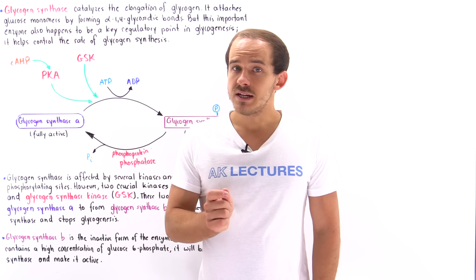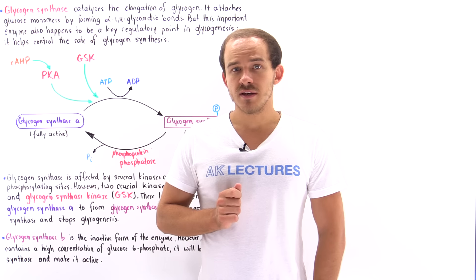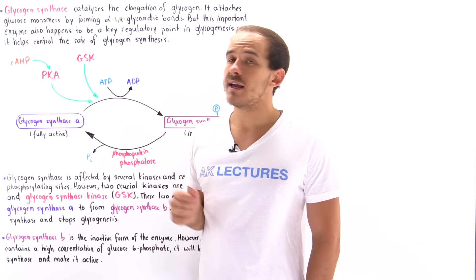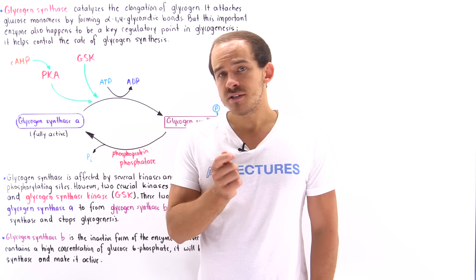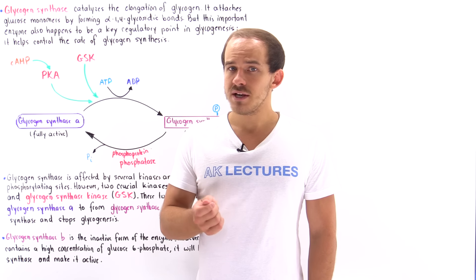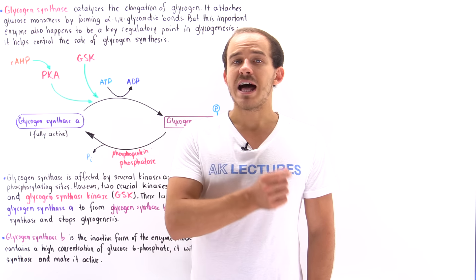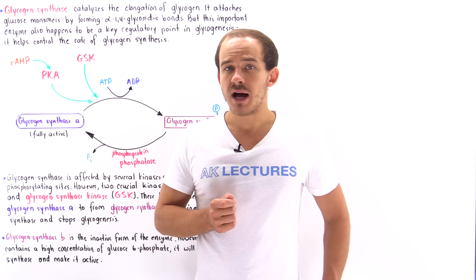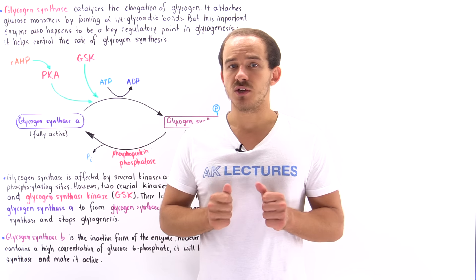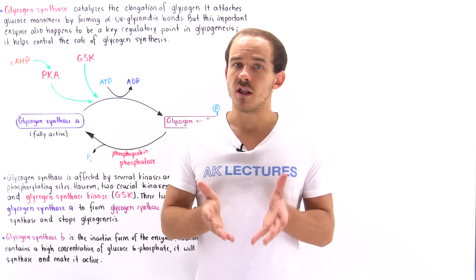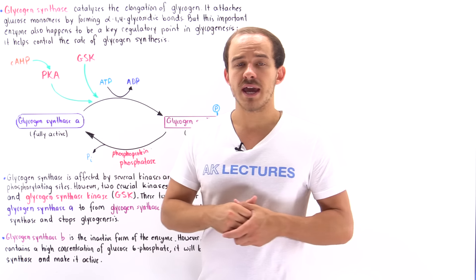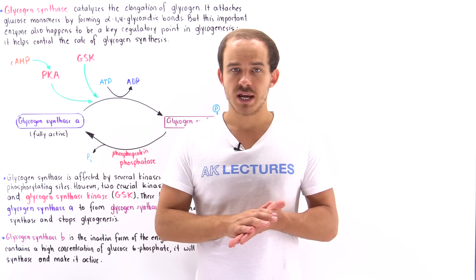The key enzyme needed for glycogenesis — the building of glycogen molecules — is glycogen synthase. This enzyme catalyzes the formation of alpha-1,4 glycosidic bonds, connecting glucose molecules within glycogen and thereby extending and elongating the glycogen polymer chain.